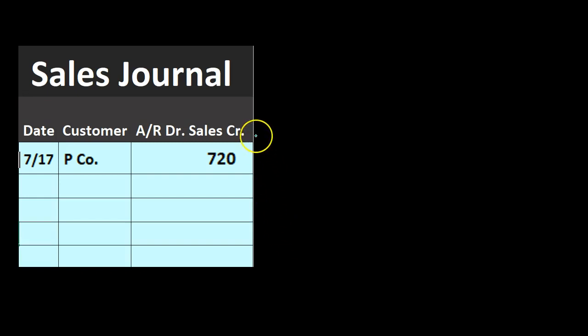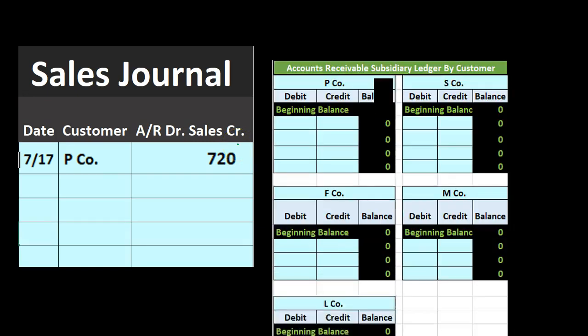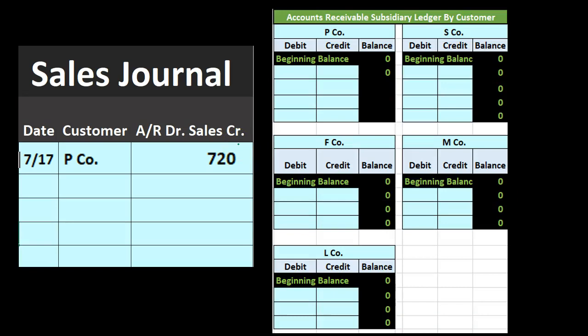Let's look at some transactions. The sales are all the same type. On 7/17, P Company made a sale for 720. In a manual system we would just be writing these out in our sales journal — this one number records the sale for a service company, increasing accounts receivable and increasing the sales revenue account. We record this to the accounts receivable subsidiary ledger, not to the general ledger. We will post to the general ledger at the end of the time period when we sum everything up and make one general journal entry.